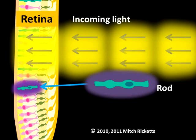Basically, the rods allow us to see in black, white, and shades of gray. Because the rods are very sensitive, they also help us see in dim light.